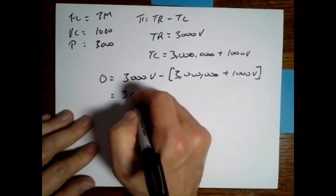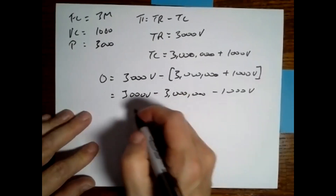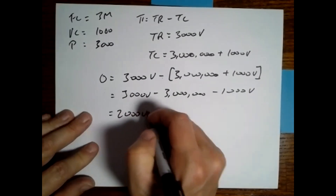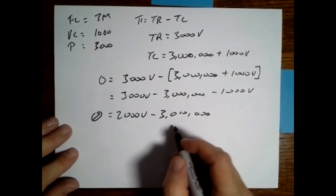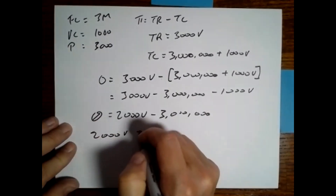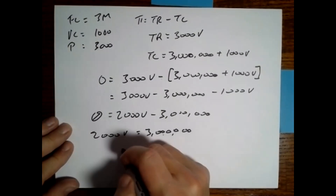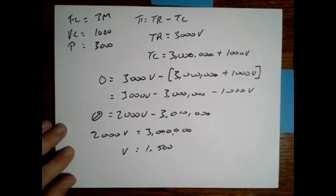If we're looking for break-even, we set profit equal to zero. So: 0 = 3,000V − (3,000,000 + 1,000V). Carry the negative through: 3,000V − 3,000,000 − 1,000V. Combining like terms gives 2,000V − 3,000,000. Adding $3,000,000 to both sides: 2,000V = 3,000,000. Divide through by 2,000, and we get V = 1,500. So the answer to problem three is 1,500.